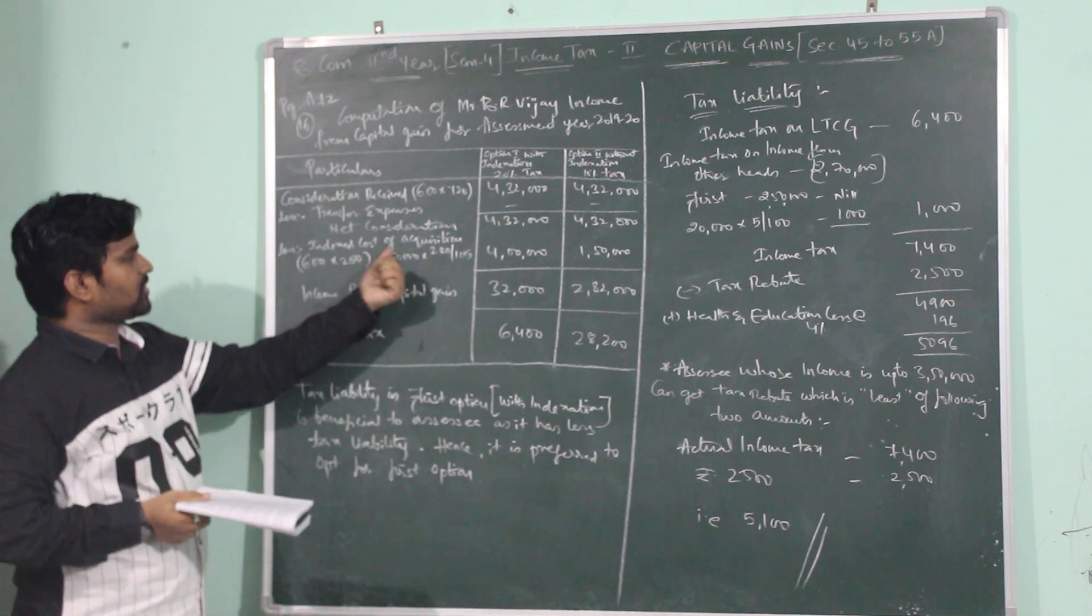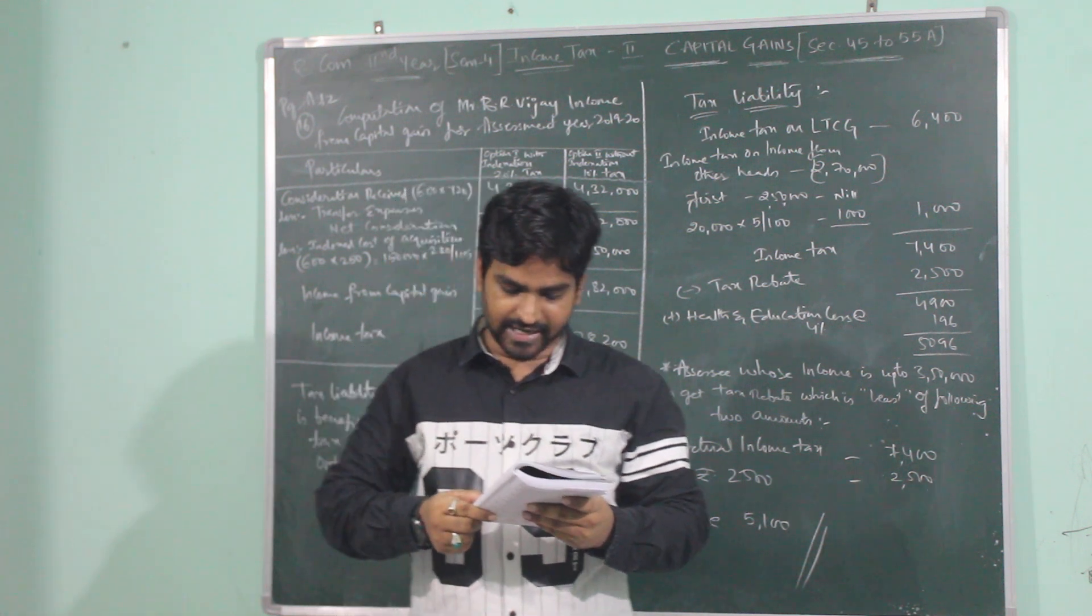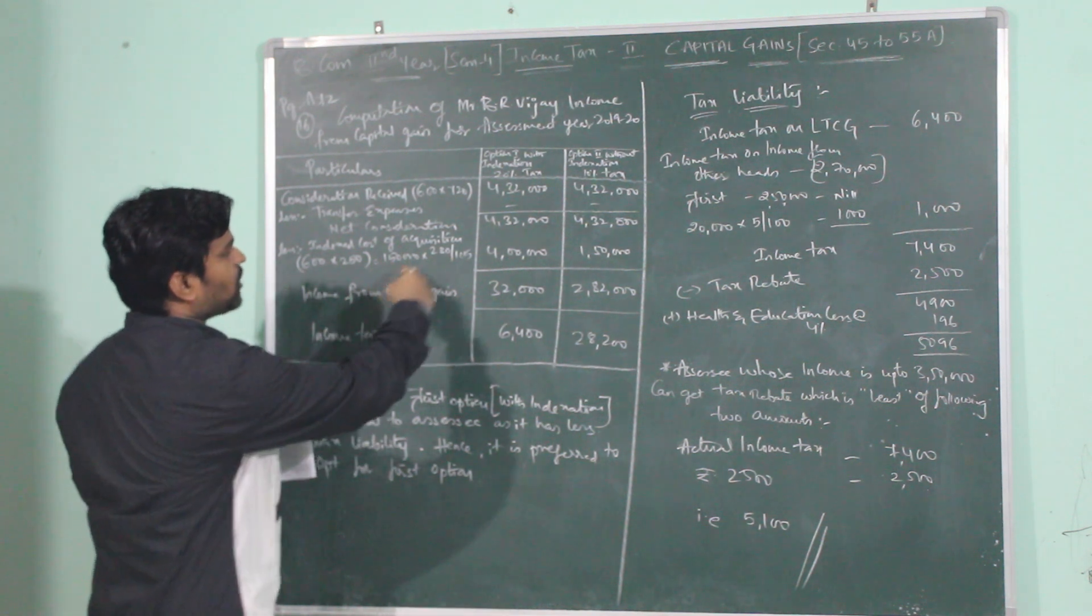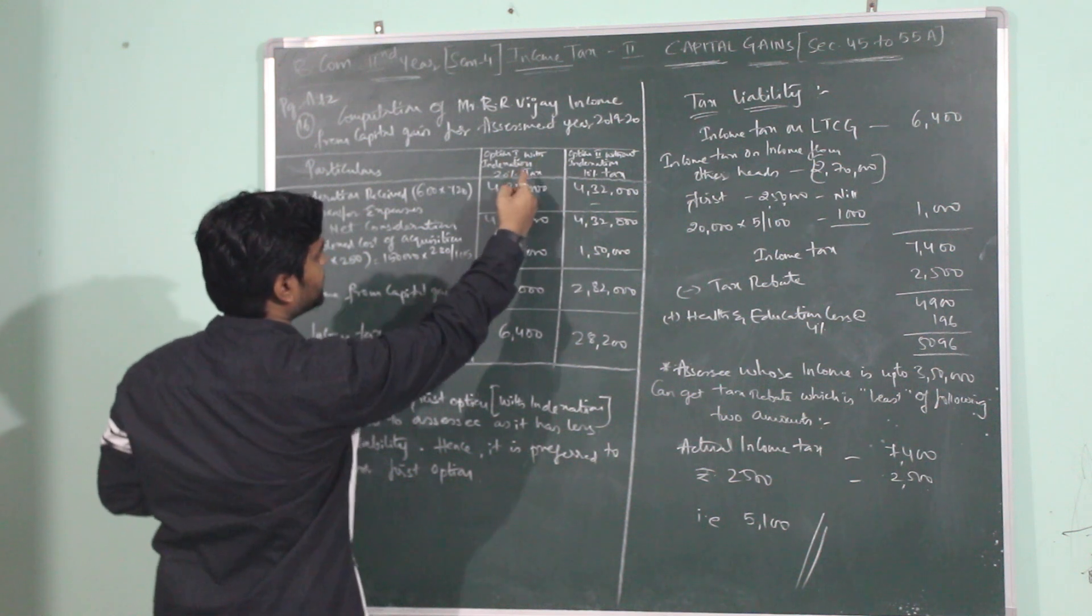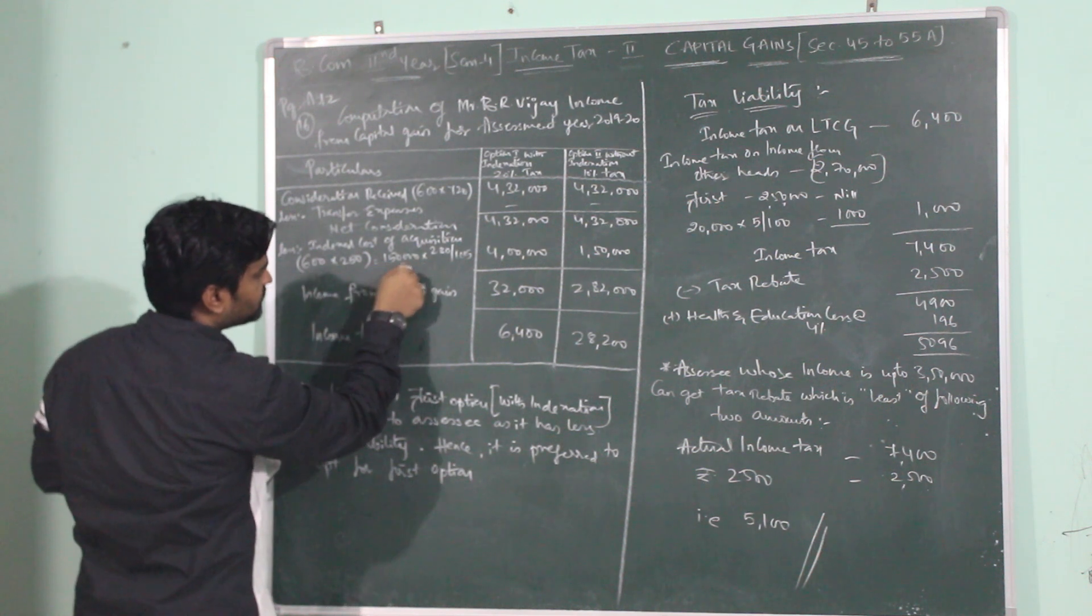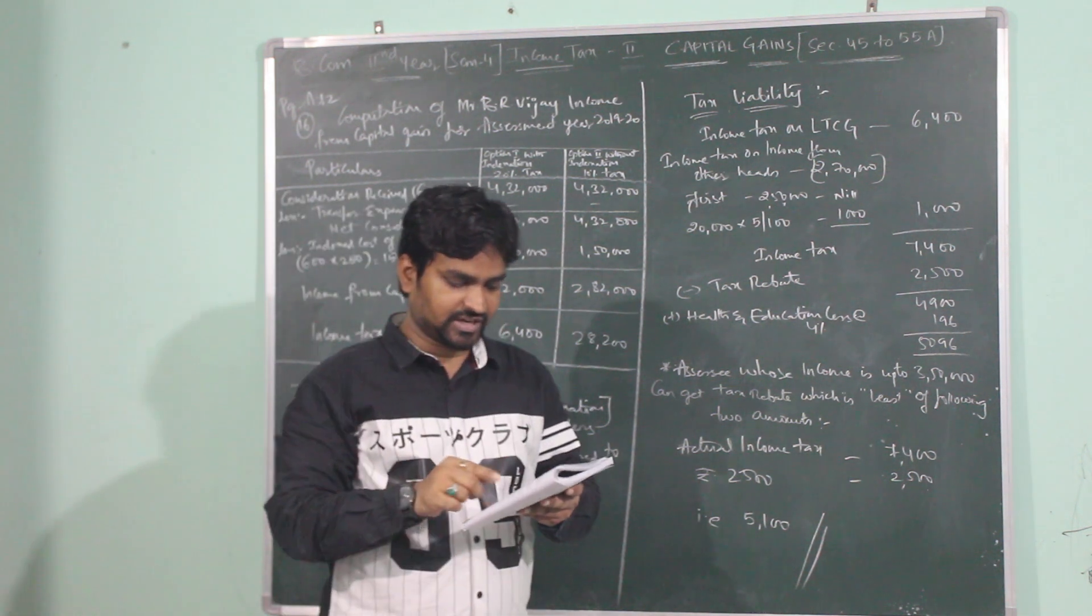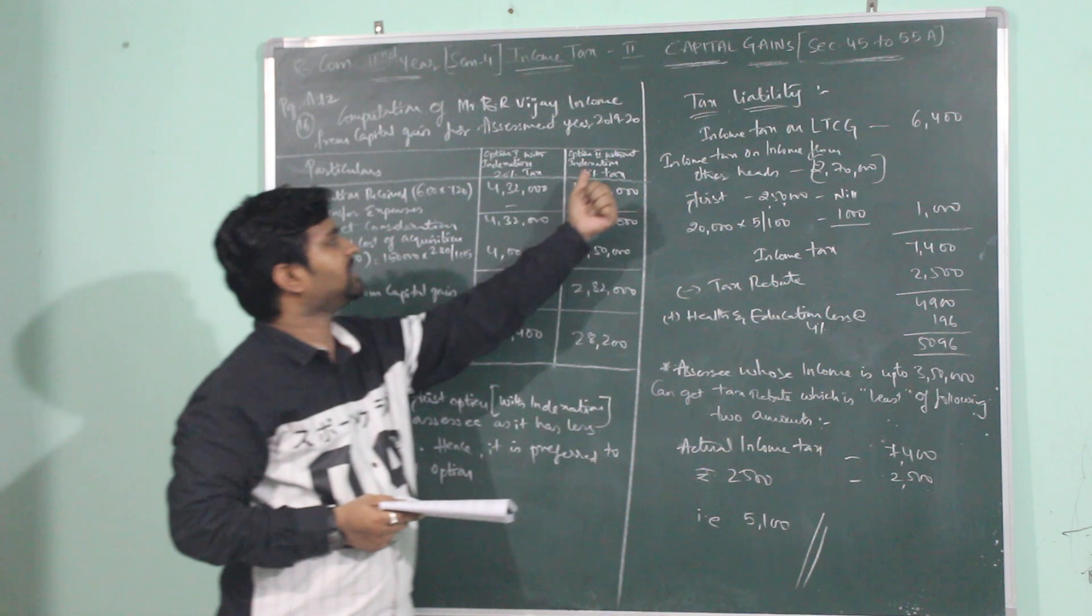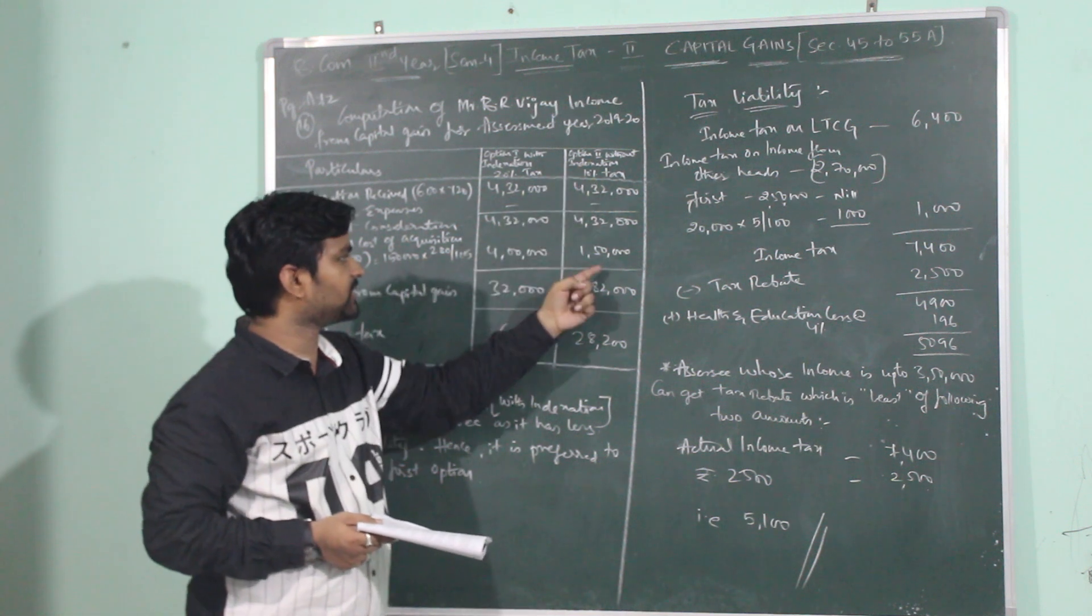Now we will be subtracting indexed cost of acquisition, which is cost of acquisition 600 shares into 250 per share, which is 1,50,000. So in option 2, which is without indexation, cost of acquisition is directly 1,50,000. Option 1 is with indexation. We will be calculating indexed cost of acquisition, which is cost of acquisition 1,50,000 into previous year index 280 divided by index of the year in which the shares were purchased, which is 105. In the option of indexation we will have indexed cost of acquisition.